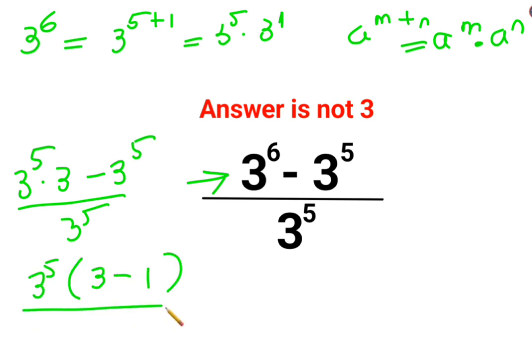Now this and this gets cancelled, and we are left with 3 minus 1, which is just 2. So the answer for this question is supposed to be 2.